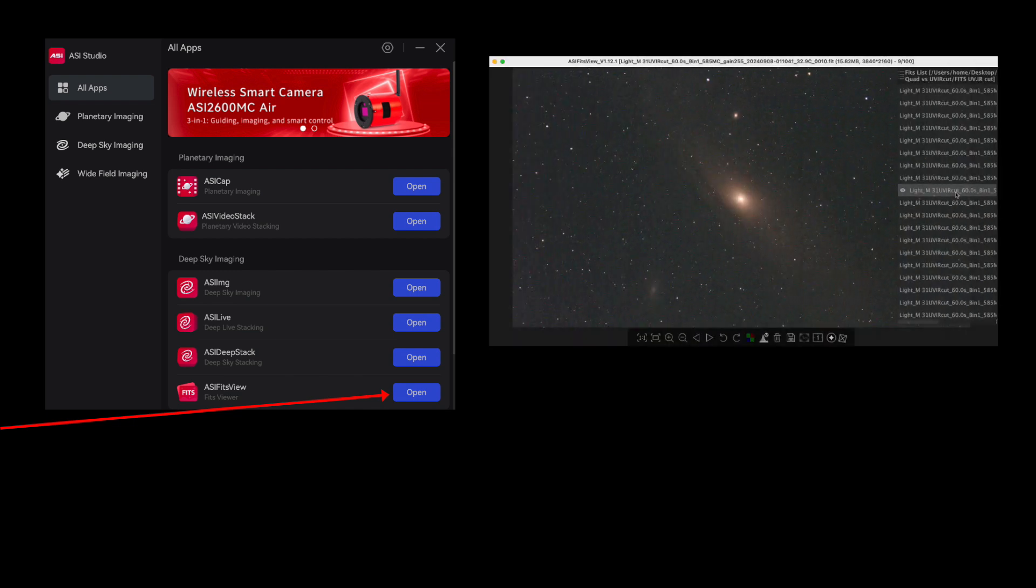This is the ASI studio benchtop application from ZWO. It is a multi-purpose software that I primarily use for reviewing my fits files prior to stacking. Here is the ASI fits view function seen at the bottom of the menu page. If you click on this open button and select a fits file in any raw data file folder, the contents of that file are displayed like this. You can then easily scroll through all of the subframes and examine them for tracking defects, clouds, airplanes, satellite trails, or other issues.